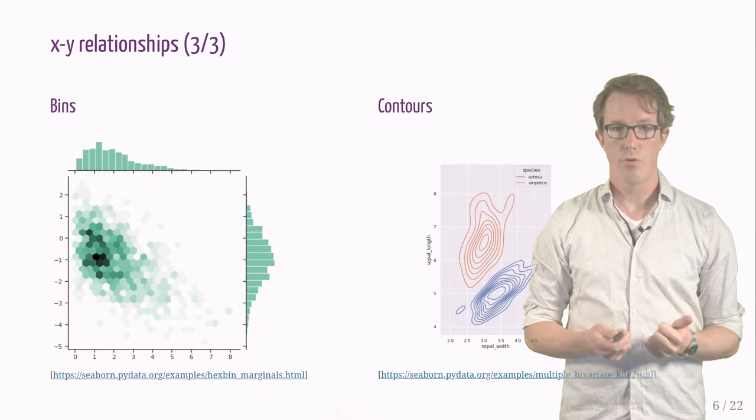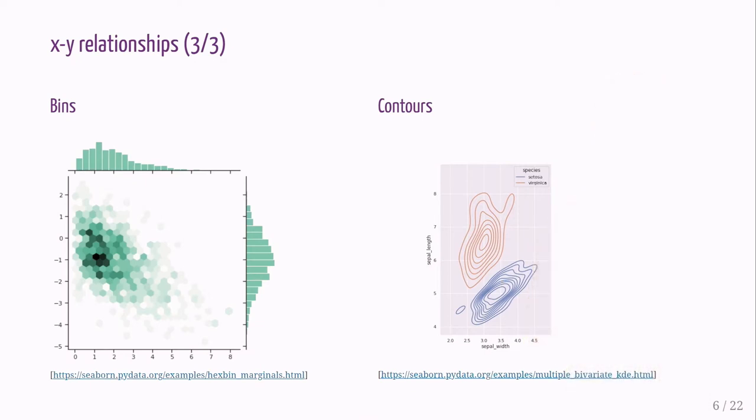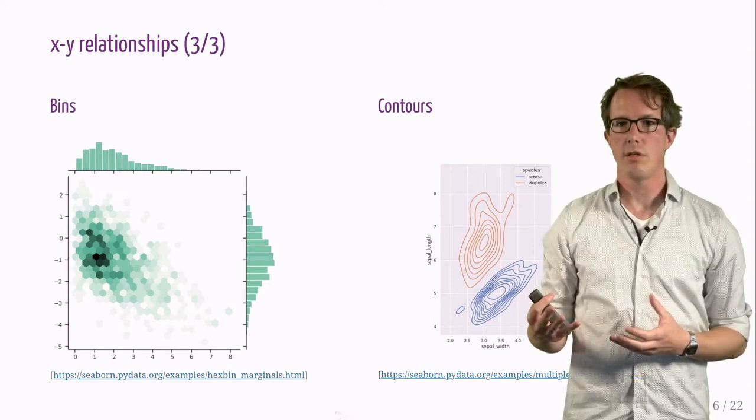On this slide, I show a bin plot and a contour plot. In this case, it's a hexagonal bin plot. We could also use squares. On the right side, we see a contour plot.